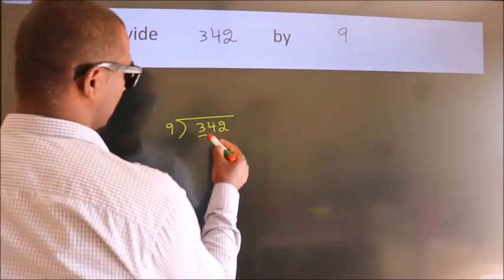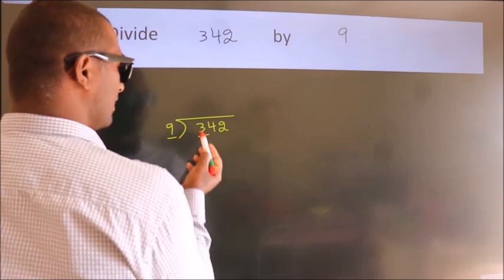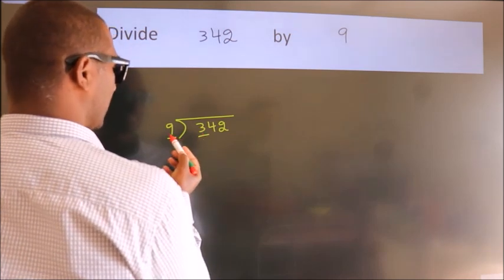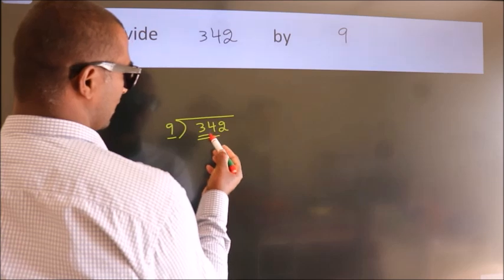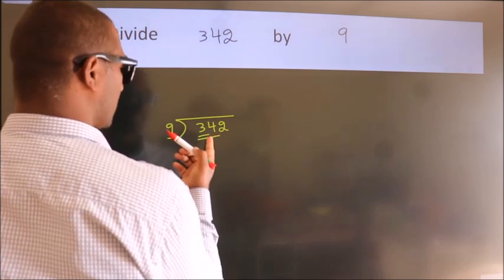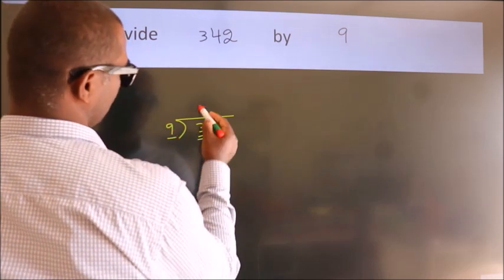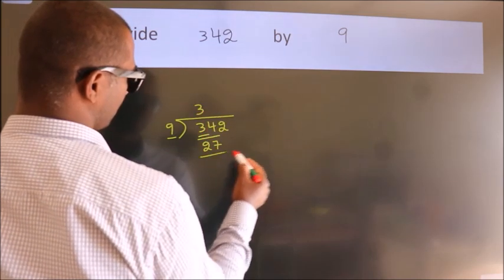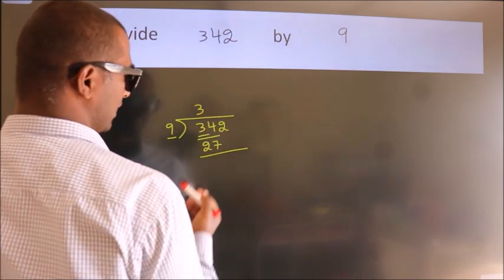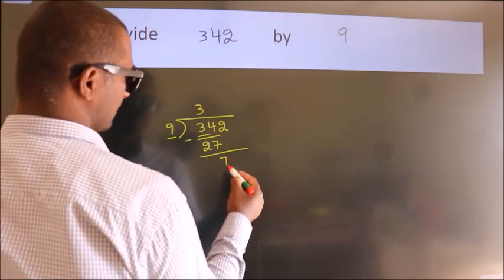Here we have 3. Here 9. 3 is smaller than 9, so we should take two numbers: 34. A number close to 34 in the 9 table is 9 threes, 27. Now we should subtract. We get 7.